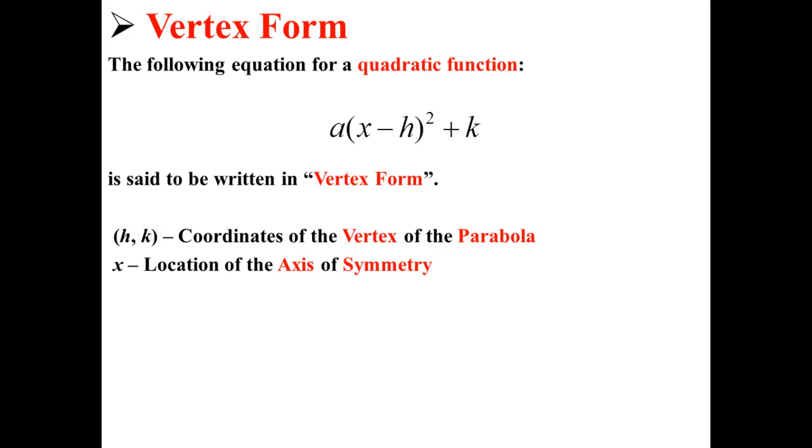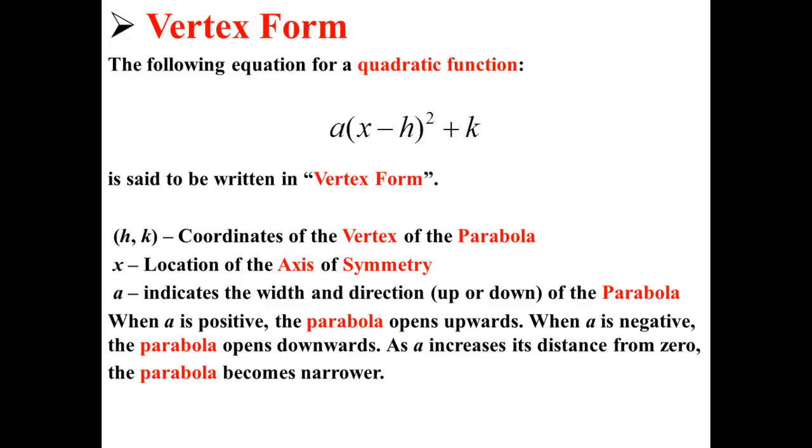x is the location of the axis of symmetry, and a indicates the width and the direction, that is up or down, of the parabola. When a is positive, the parabola opens upwards. When a is negative, the parabola opens downwards.